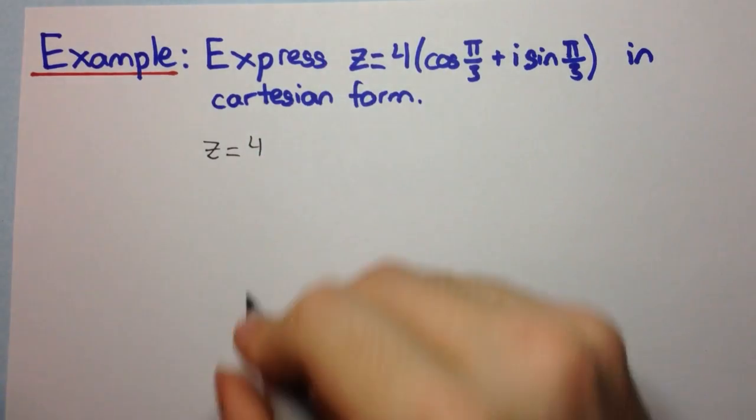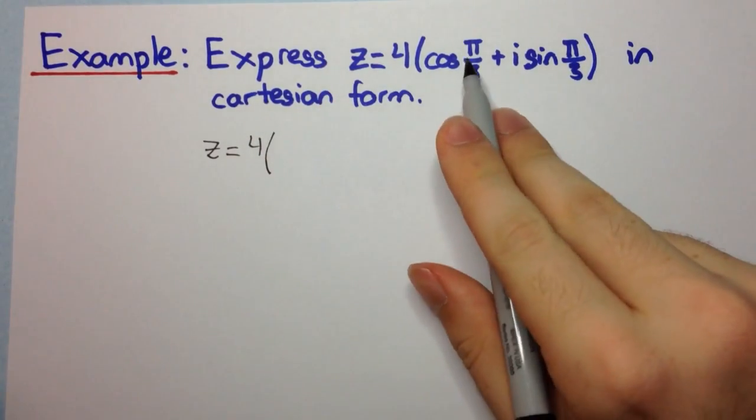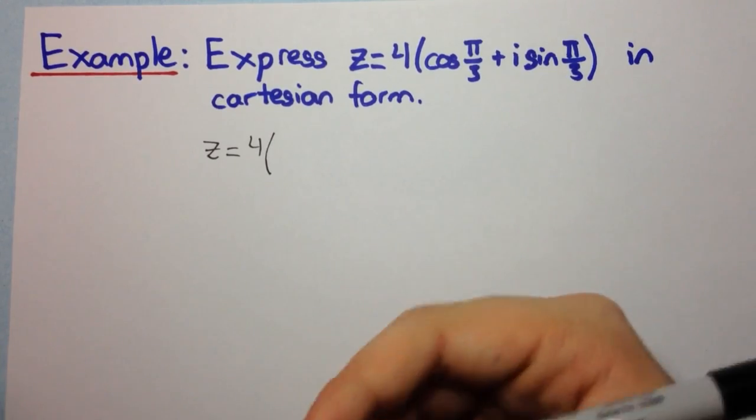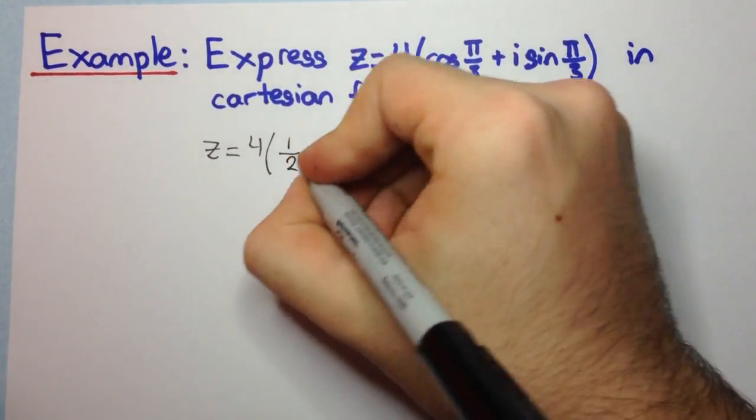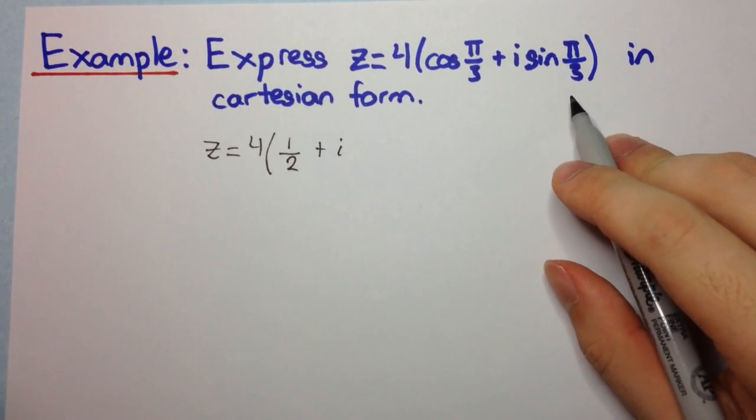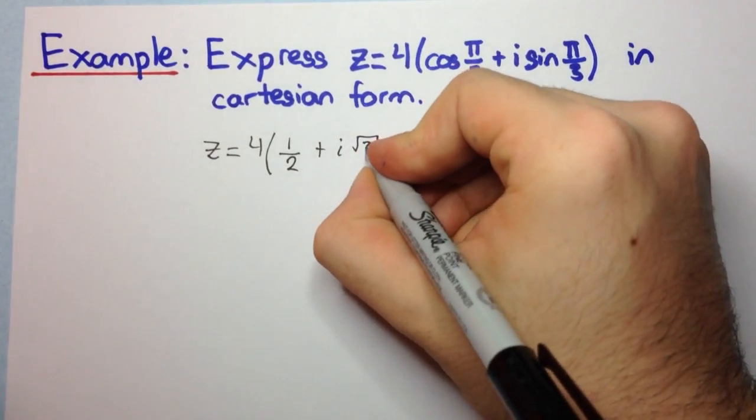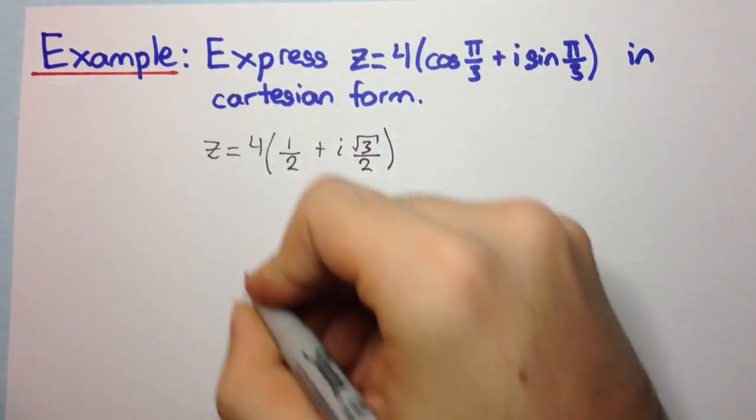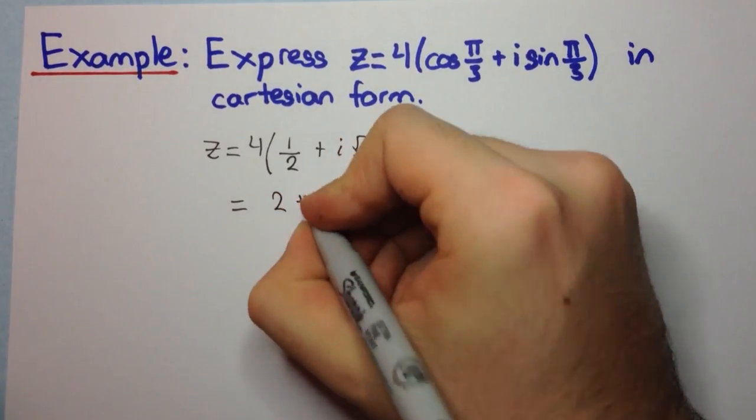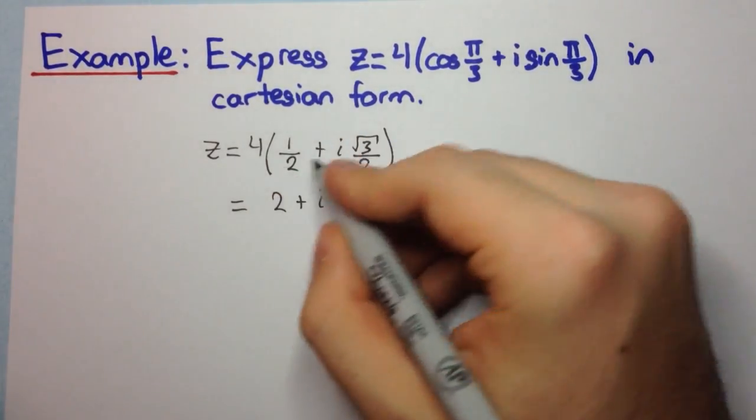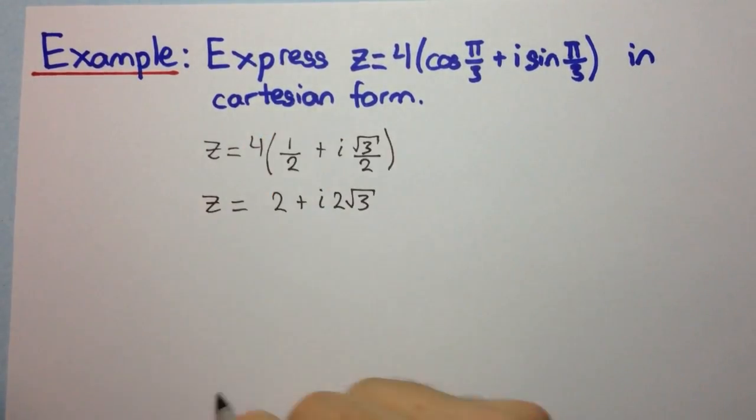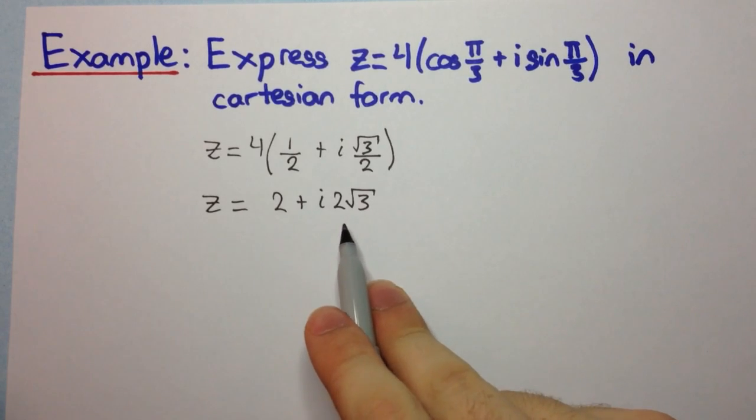So we're going to have our 4 out the front. So cos pi on 3, well that's cos 60, which is a half, plus i times sine pi on 3, or sine 60, which is root 3 on 2. And that's equal to 4 times a half, which is 2, plus i, 4 times root 3 on 2 will be 2 root 3. And so z is 2 plus i 2 root 3.